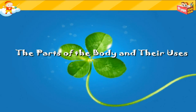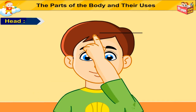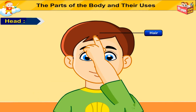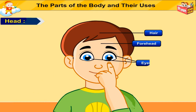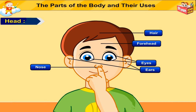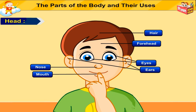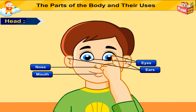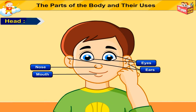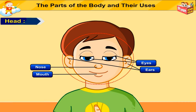The Parts of the Body and Their Uses. The head consists of hair, forehead, eyes, ears, nose and the mouth. The eyes, nose, ears and mouth are parts of the face.